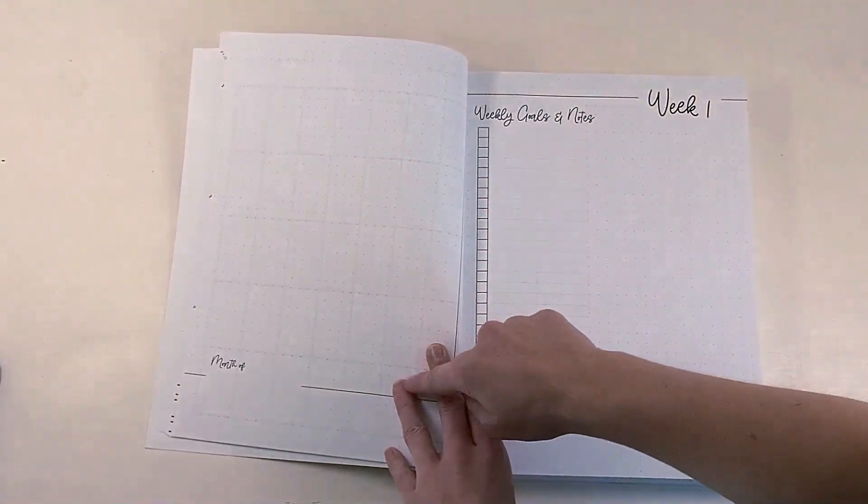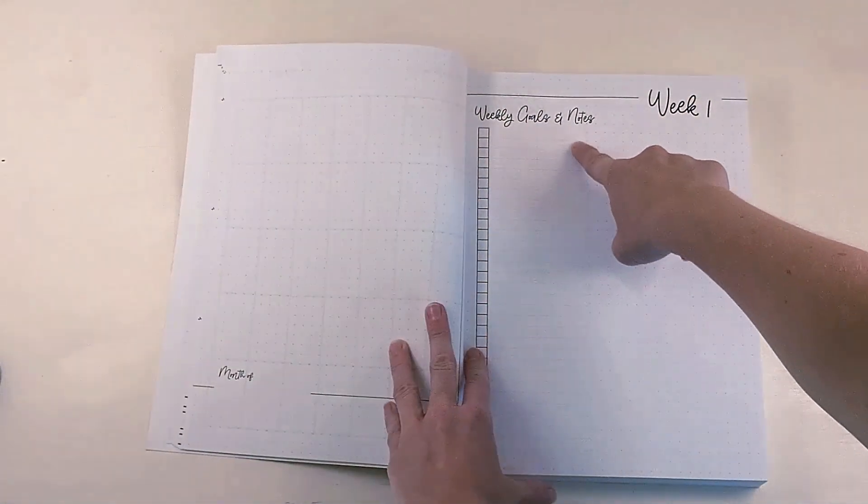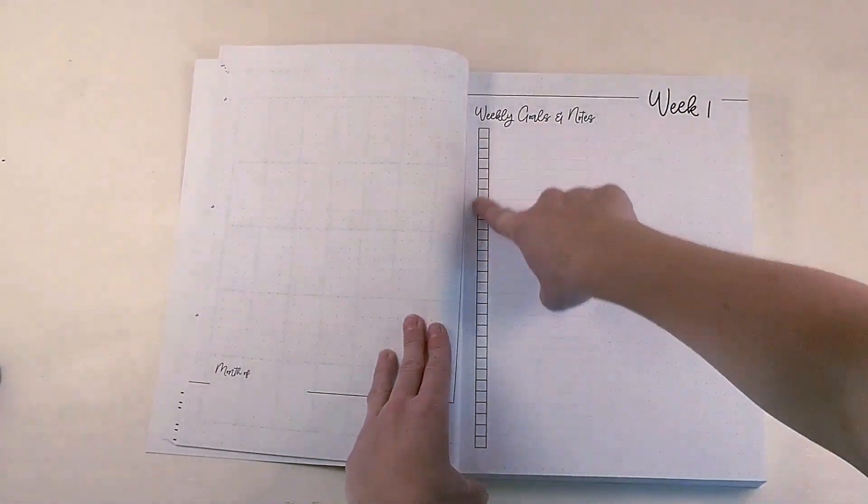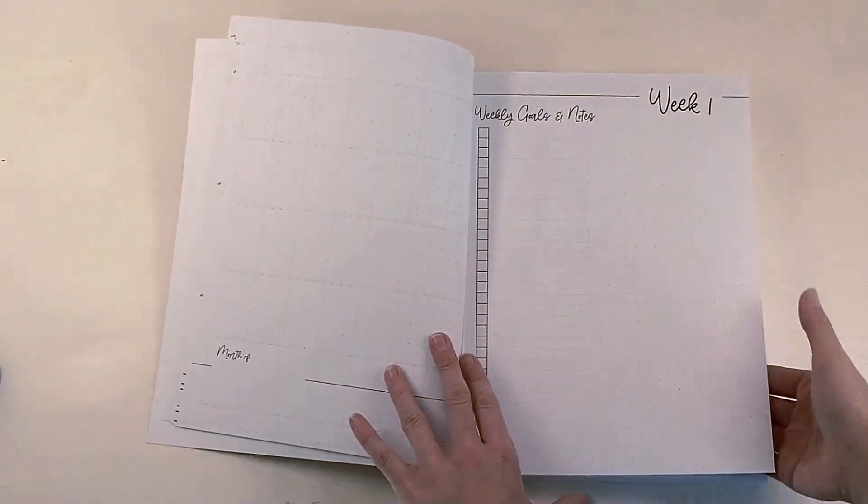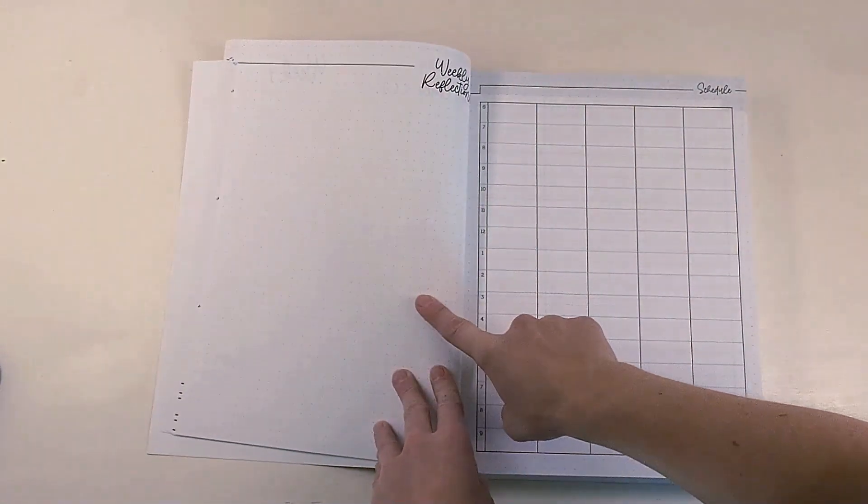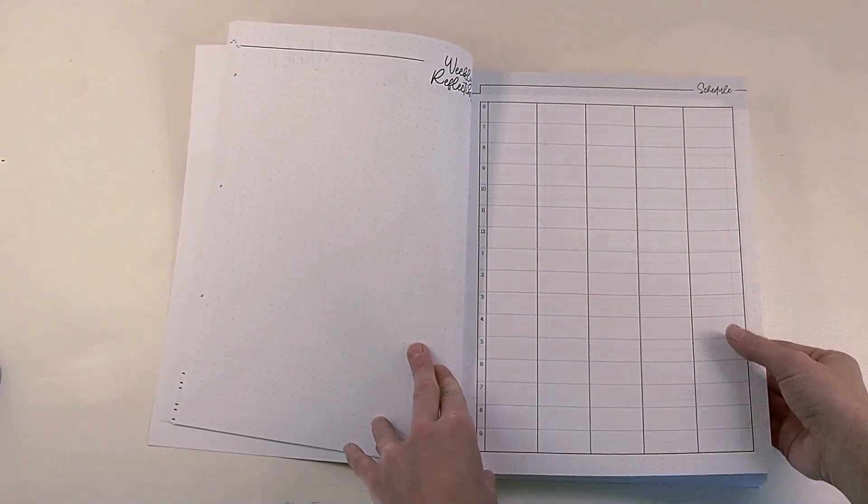And then we have the week goals and notes here. So you can have notes here and goals here with a checkbox for each goal that you might want to write. And then you can have a spot for reflection. So a lot of spaces to write throughout your months and your weeks.